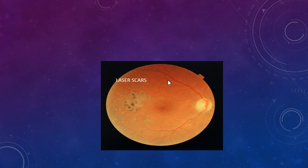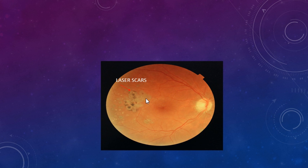This fundus image does not show any significant abnormality at the disc and the blood vessels look fine — no obvious hemorrhages or exudates in the macular area. However, there are some pigmentary changes temporal to the fovea — these are laser scars, appearing to be from quite some years ago, as newer laser machines produce very small spot scars with less scarring. Laser is one of the treatment options for diabetic maculopathy.